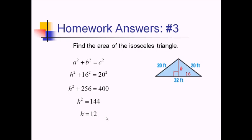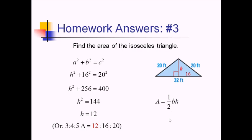You might have also recognized that this was in a 3-4-5 ratio — if you multiply 3-4-5 all by 4, you've got 16, 20, and that means this other one would have to be 12. So either way, we have that height of 12. Now we'll use one half base times height: one half times 32 times 12. That's 6 times 32, which is 192 square feet. We've got to have units, because this is a real-life application problem.